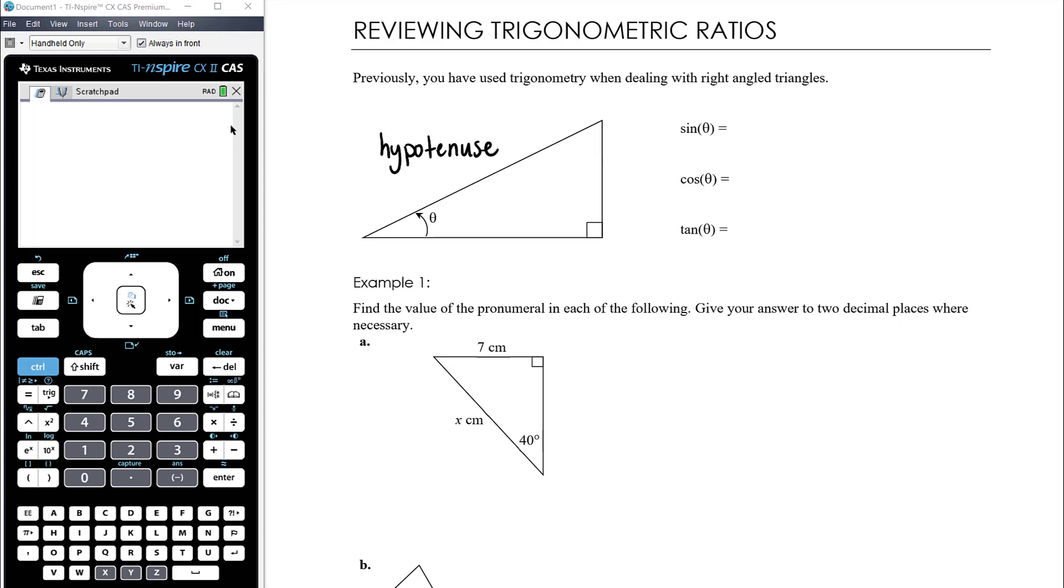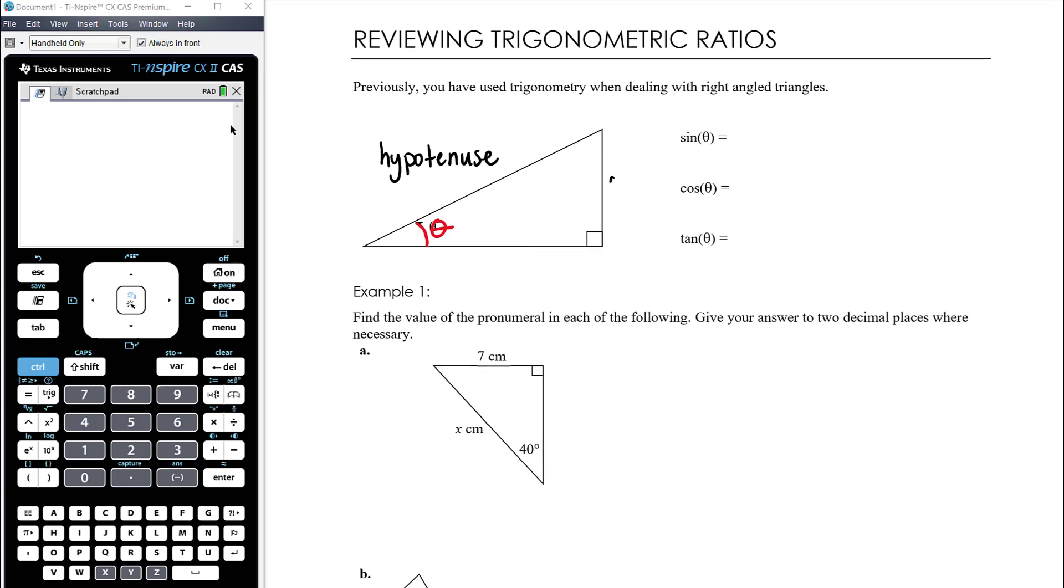And then the other two side lengths are named relative to the angle that we're interested in. So in this particular triangle, we're interested in this angle down here, which is called theta. And so we're going to name the other two side lengths relative to that angle. So relative to that angle, this side over here on the right is opposite that angle. So this is the opposite side. And this side on the bottom is next to or adjacent to that angle. So adjacent side is next to the angle, opposite side is quite literally opposite the angle, and the hypotenuse is the longest side.